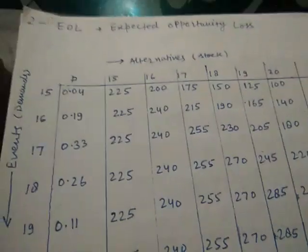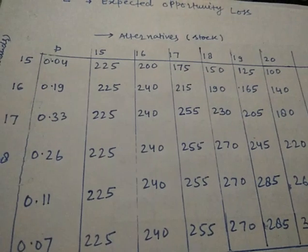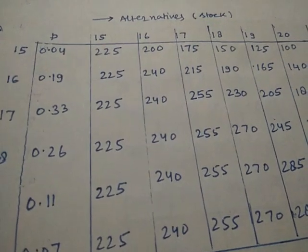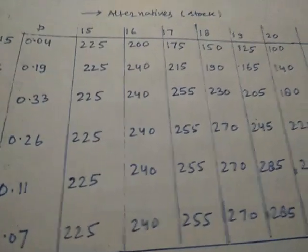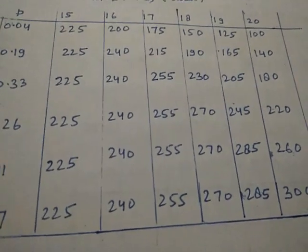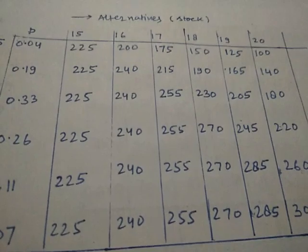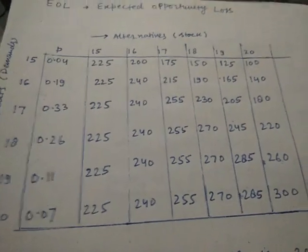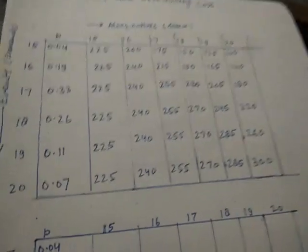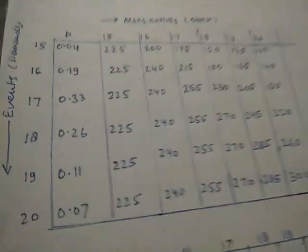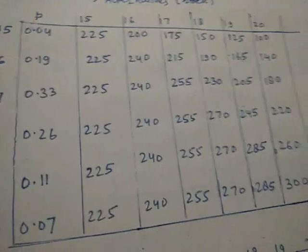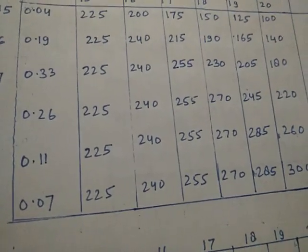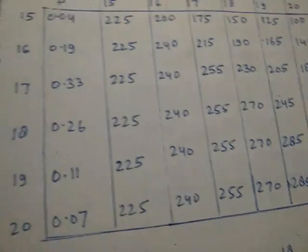We calculated the conditional payoff table in the previous question by considering each demand and each course of action to calculate each payoff. Now, for applying the EOL criterion, you have to calculate one more thing — the Expected Opportunity Loss table. But before that, you have to calculate the Opportunity Loss table. Opportunity loss is essentially the same as regret that we used in decision making under uncertainty with the regret criterion.